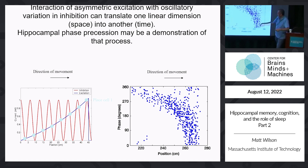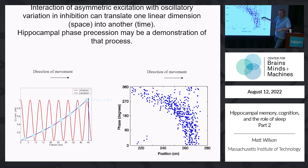This relationship between phase and position — space and time — suggests a kind of temporal code. You can read from the phase the relative position. In the latter half of the field, however, you don't have that temporal code. If I tell you the phase of a spike, I can't tell where the animal is — they're all in roughly the same spot. The only information is rate: firing rate does vary as a function of relative position, but precise temporal coding is only present in the first half.